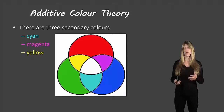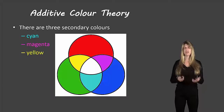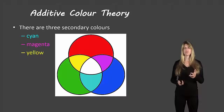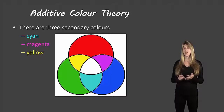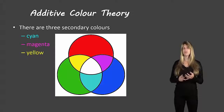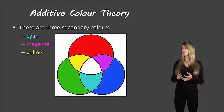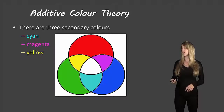If we combine red, green, and blue — all three of our primary colors together — we get white light. So the white light that we see around us is actually made up of the three primary colors. If you take a look at that diagram, you can see how we get our secondary colors: green and blue combine to make cyan, red and blue combine to make magenta, and red and green combine to make yellow.